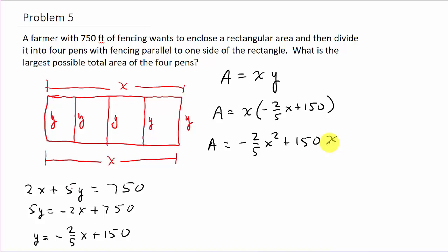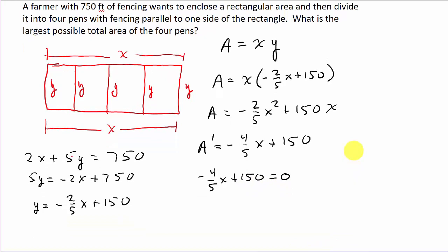Alright. Now, let's take the derivative. So, the derivative is here. That's negative 4 fifths x plus 150. Set that equal to 0.